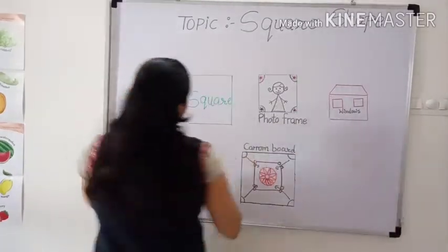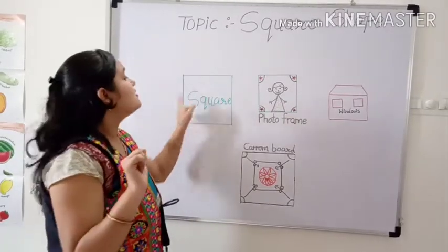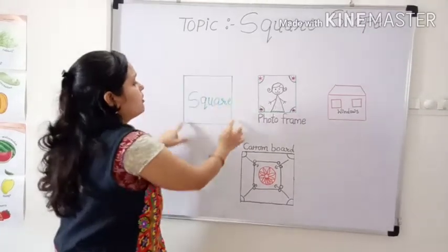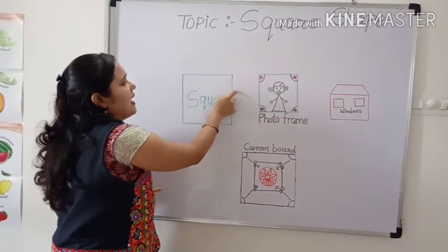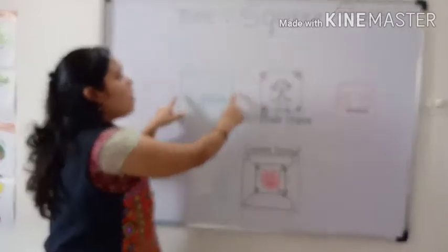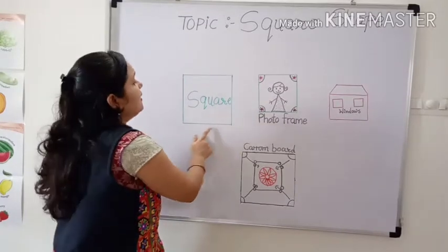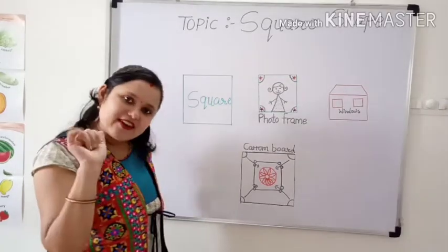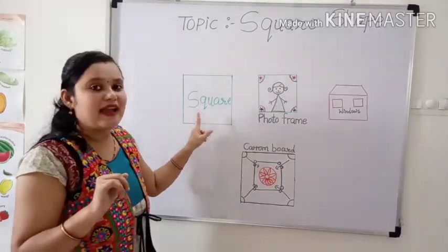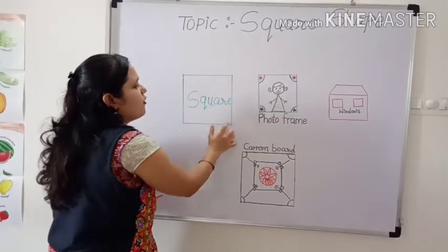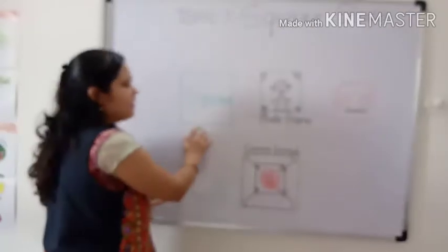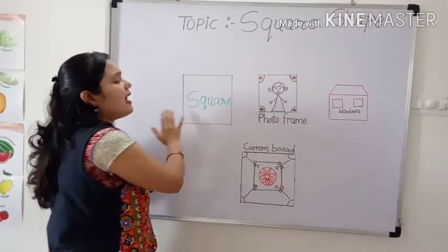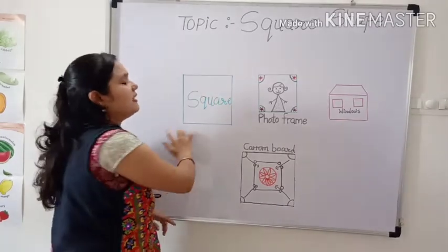One more time. Hello, hello, square is my name. I have four sides, I have four sides, and they all are the same. One more time. Hello, hello, square is my name. I have four corners, I have four corners, I have four sides and they all are the same.